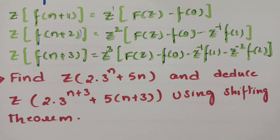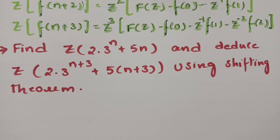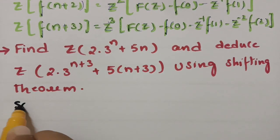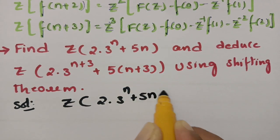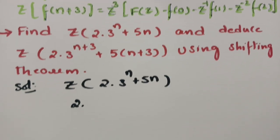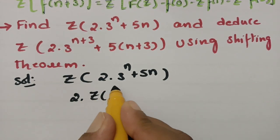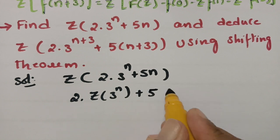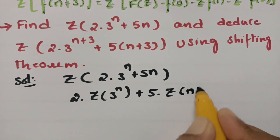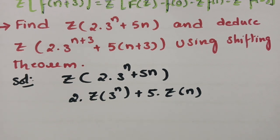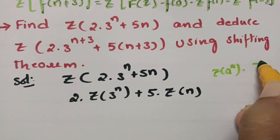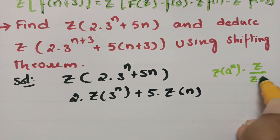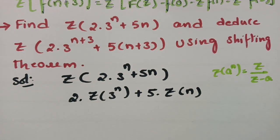First of all, we have to find the Z transform of 2·3^n + 5n. We bring 2 outside — this is the Z transform of 3^n — and 5 is a constant, so we bring it outside with the Z transform of n. We have the formula: Z transform of a^n is nothing but z/(z−a).